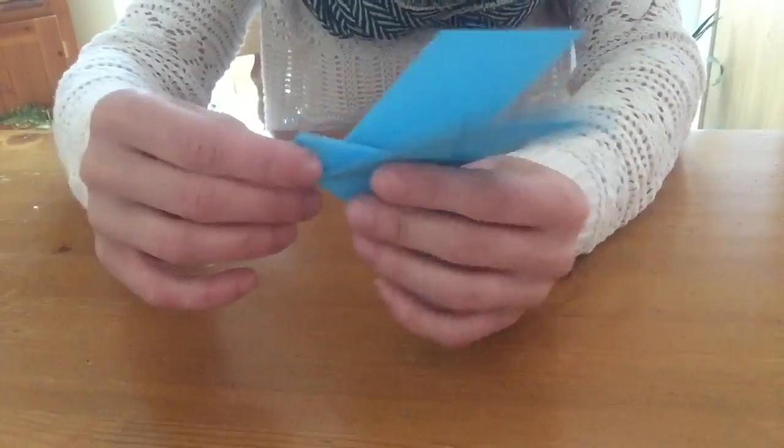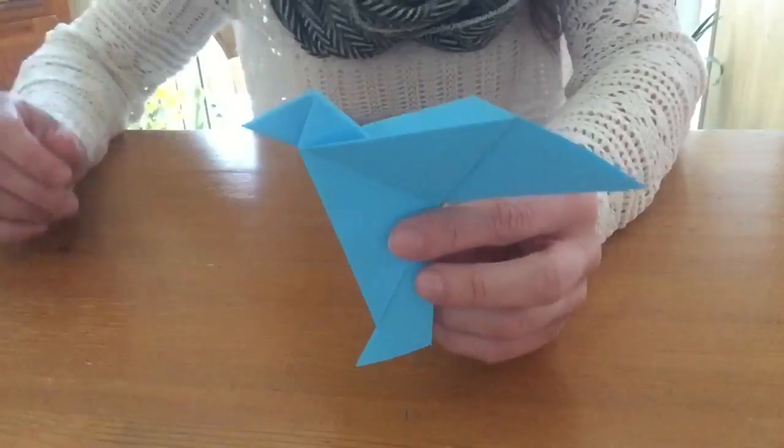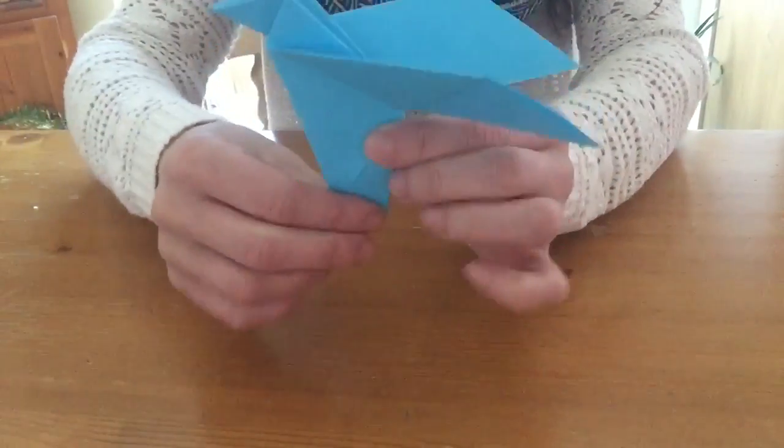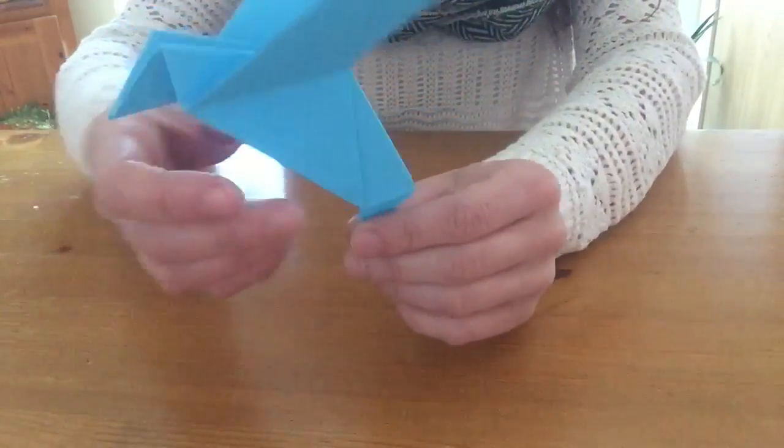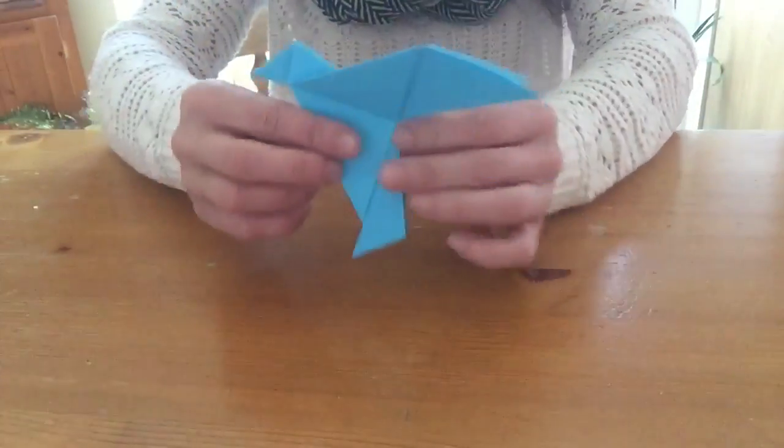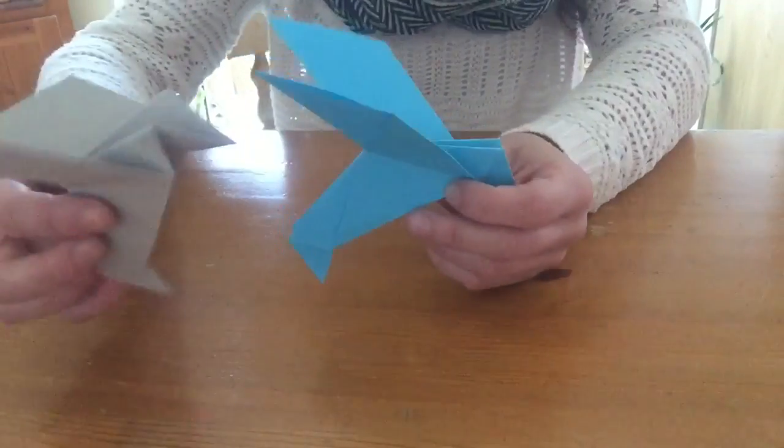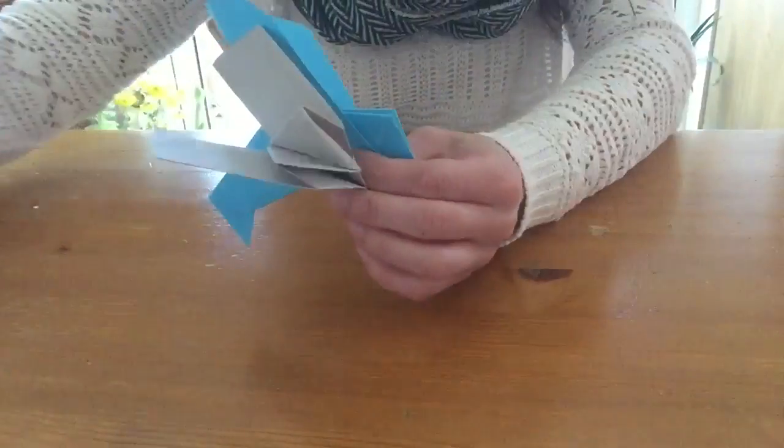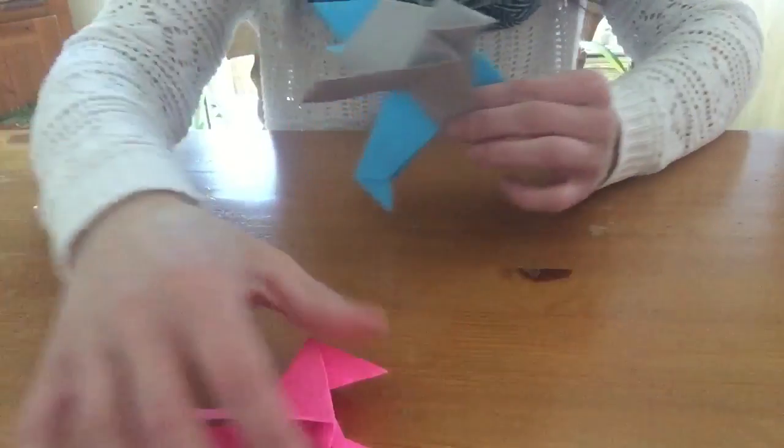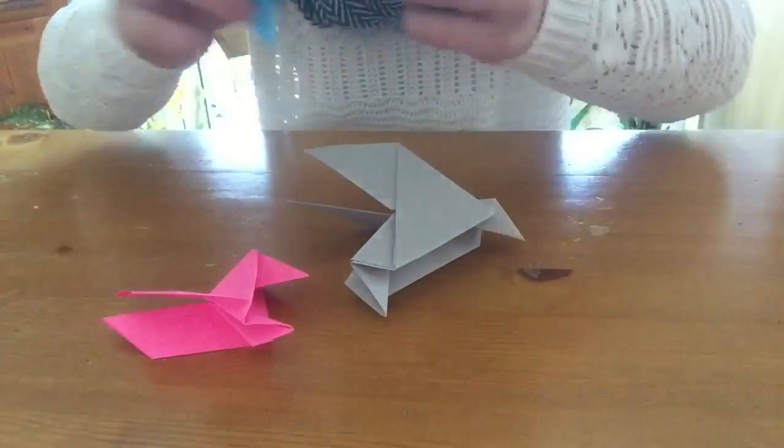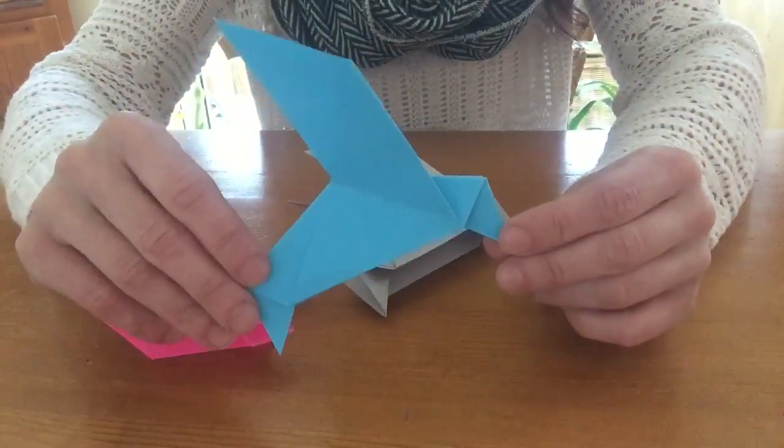So I'm going to open the wings up a wee bit more. You can draw eyes now but I'm not going to. Yeah, that's your tail and that's the whole entire bird. That's how you make your bird. So see ya.